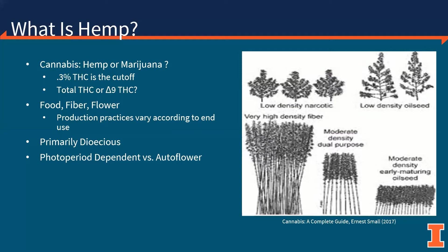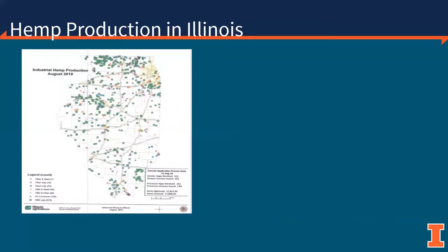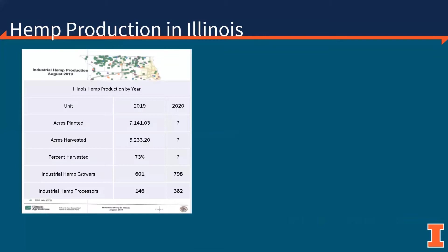In 2019, the first year of production in Illinois, there was a lot of interest across the state to grow industrial hemp and nearly all of that was for cannabinoid production. Official numbers from the Illinois Department of Agriculture show that there were 601 officially licensed hemp growers and 146 licensed hemp processors. At the end of the growing season, we saw that 7,100 acres were planted and about 5,200 acres were harvested.